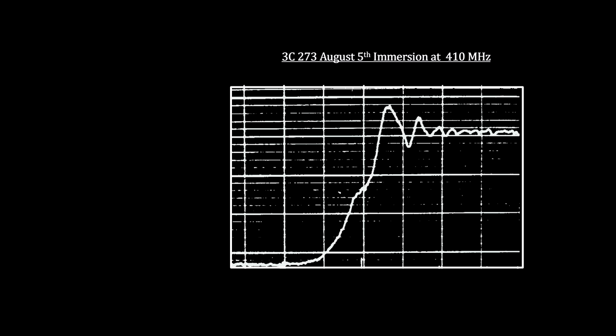Now let's take a look at what the astronomers found when they actually monitored their three occultations in 1962. Here's the immersion pattern on August 5th. This bump at the end indicated that the source had some sort of structure. It's not just one object.